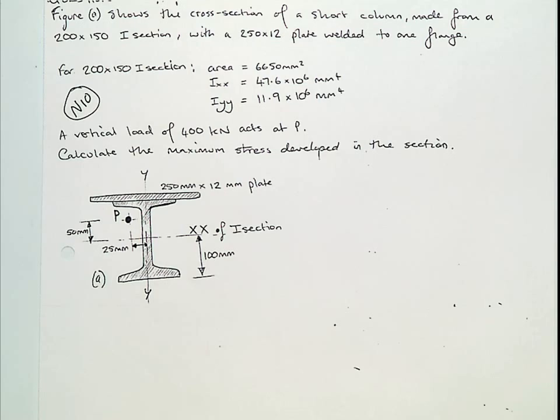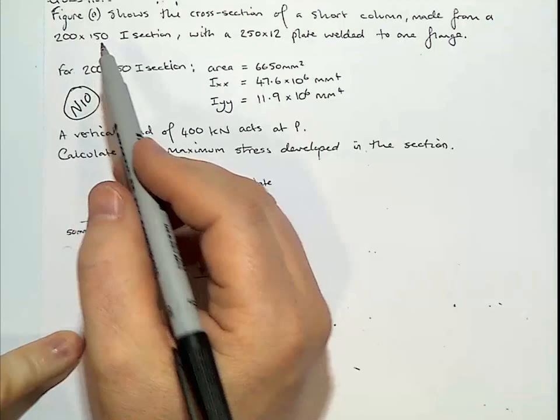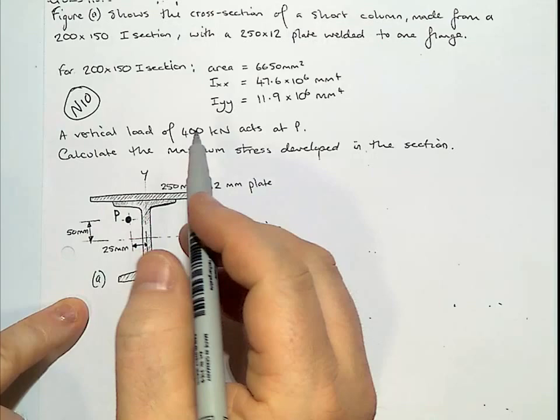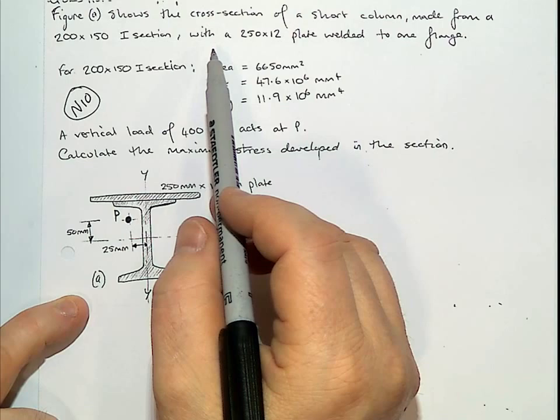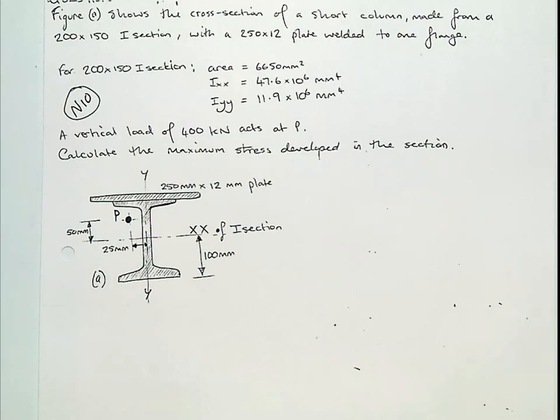What we have is figure A, this here, shows the cross-section of a short column. So there's a force coming down through this. It's made from a 200 by 150 I section. And it's got a 250 by 12mm plate on the top.